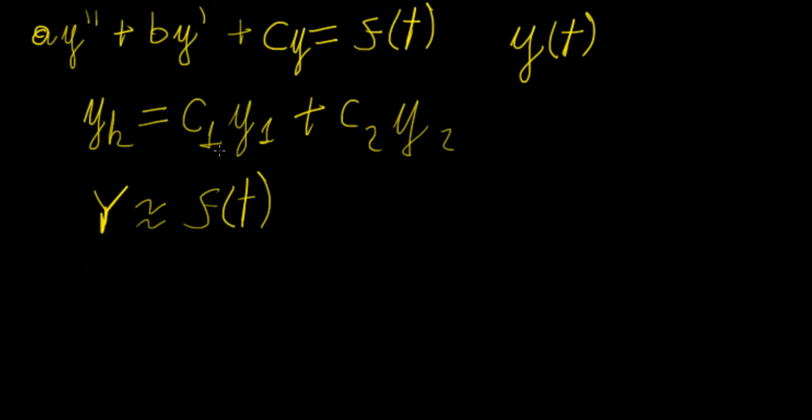This is better illustrated through an example, so that's what I'm going to show you now. We're going to start with a simple example. This one is going to be y double prime minus 2y prime minus 3y equals to e to 2t.